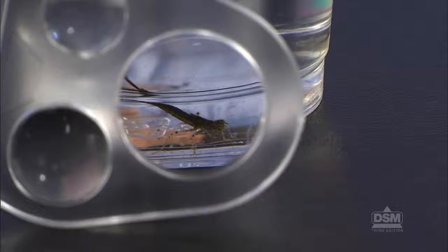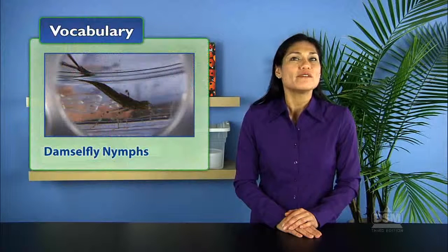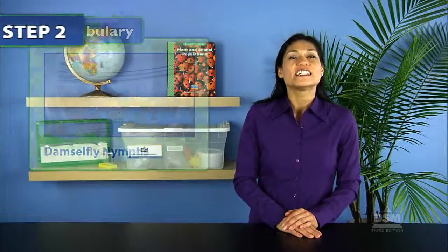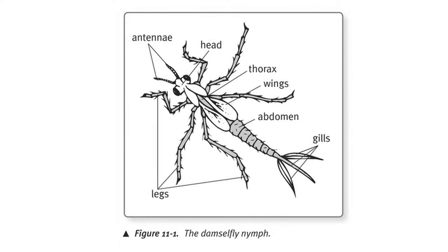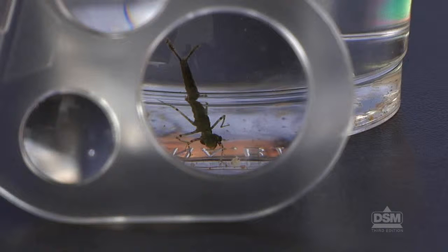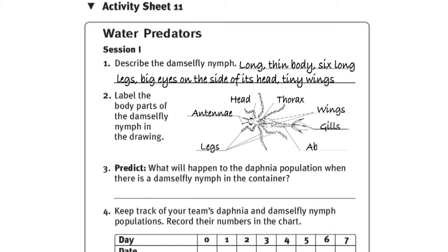Allow students time to observe the damselfly nymphs through the magnifiers. Explain that nymph is the term for a young insect that looks somewhat like the adult it will become. Tell students that adult damselflies have full-size wings and can fly around in the air, but damselfly nymphs have only small wings and live in the water. Next, show the damselfly nymph graphic and point out its body parts. Help students identify the head, antenna, thorax, abdomen, gills, wings, and legs on their living damselfly nymphs and label the illustration on their activity sheets.